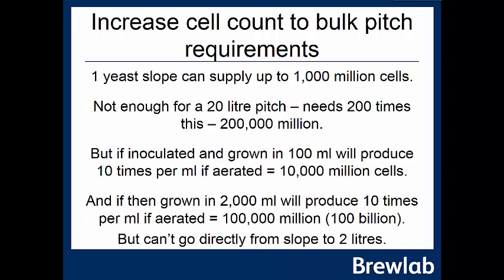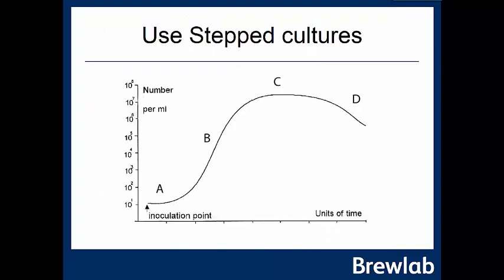If we take yeast from a yeast slope — as we supply at BrewLab — we might get about 1,000 million cells, which is nowhere near enough to pitch 20 litres since we need 200 times that. However, using progressive step growths we can build it up. Inoculating and growing in 100 millilitres with aeration — shaking it with good air exposure through a filtered bung — will produce about ten times the initial amount, going from one million to ten million cells.